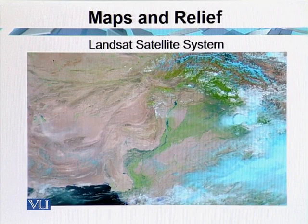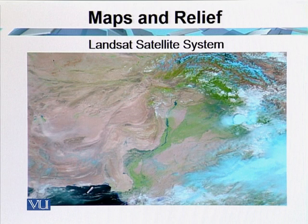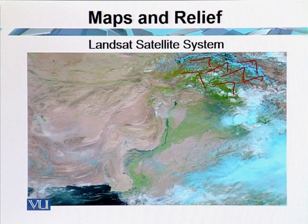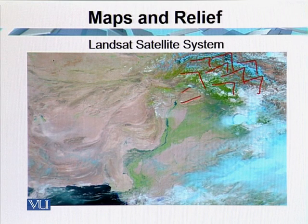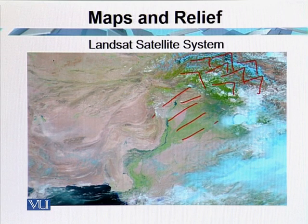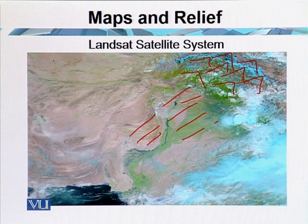This is a map of Pakistan taken by the Landsat satellite system. You can see the northern area of Pakistan, which is covered with mountains and is actually under snow or glaciated land. These are the highest mountains of the world. The central part of Pakistan is the plain region.